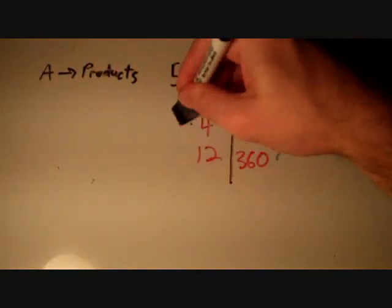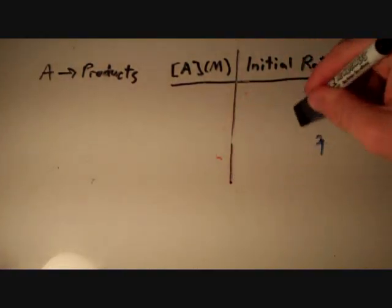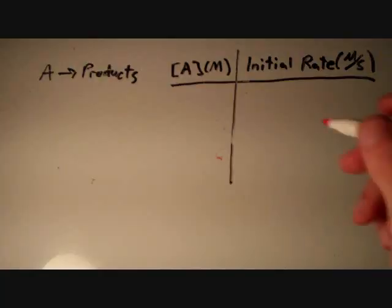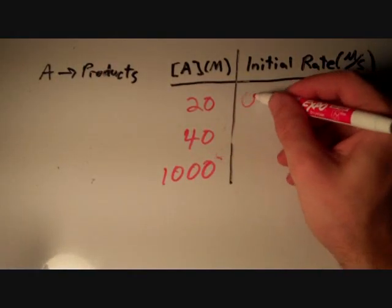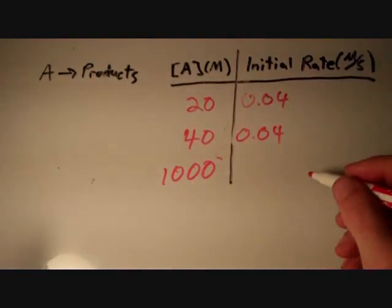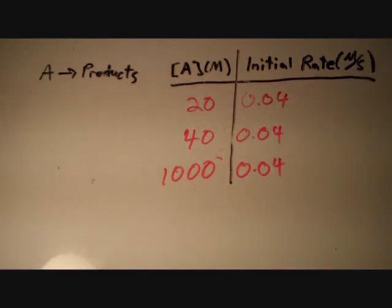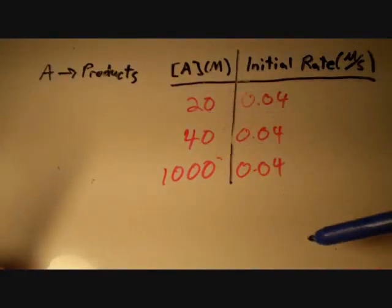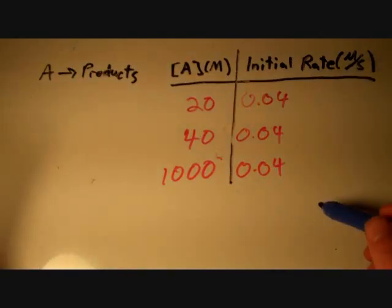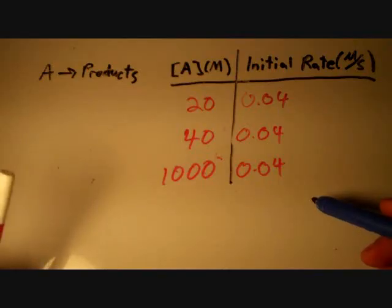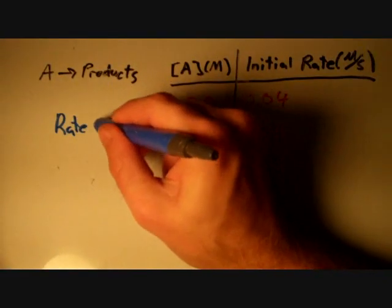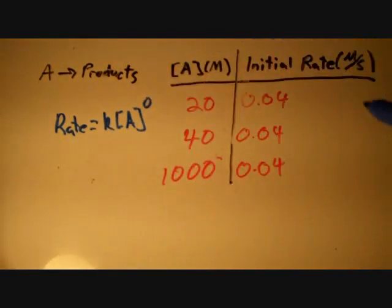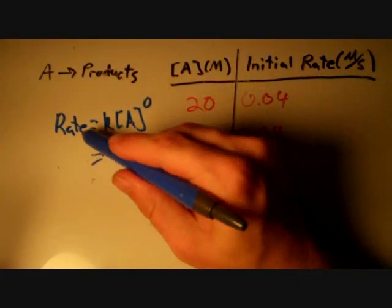Let's look at one final scenario. Suppose we have concentrations of 20, 40, and 1000 molar, and the initial rate is 0.04 molar per second for all three. No matter what we do to the concentration of A, the initial rate stays the same — the rate is independent of concentration. This is a zero-order reaction: rate equals k times the concentration of A to the zero power, and since anything to the zero power is one, the rate equals k.